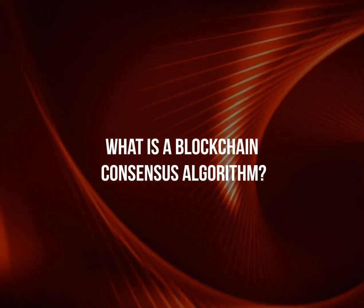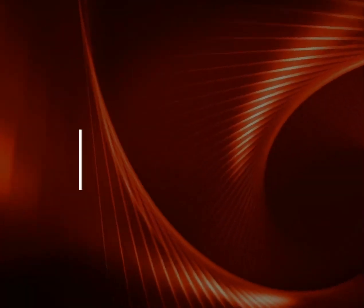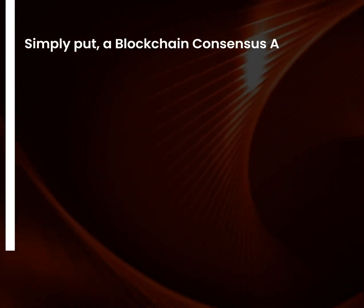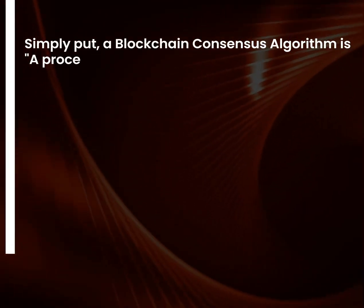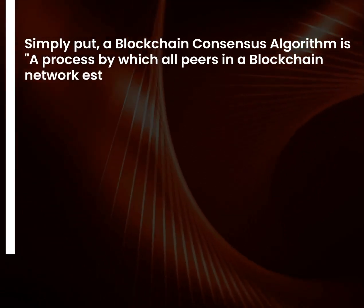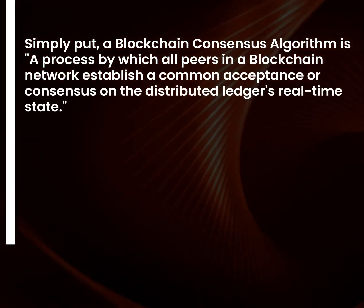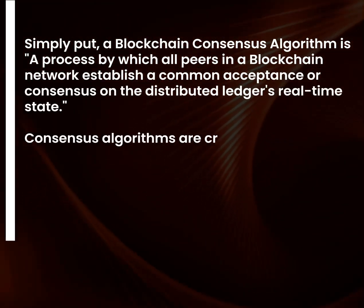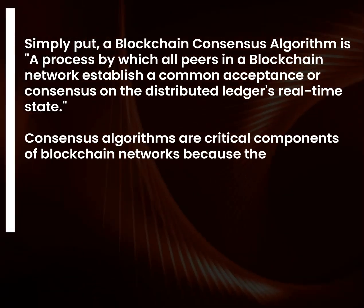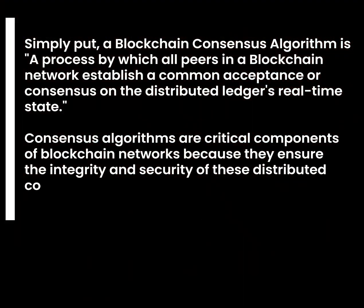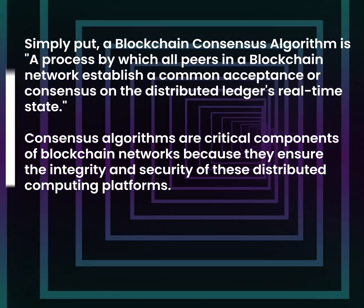What is a blockchain consensus algorithm? Simply put, a blockchain consensus algorithm is a process by which all peers in a blockchain network establish a common acceptance, or consensus, on the distributed ledger's real-time state. Consensus algorithms are critical components of blockchain networks because they ensure the integrity and security of these distributed computing platforms.